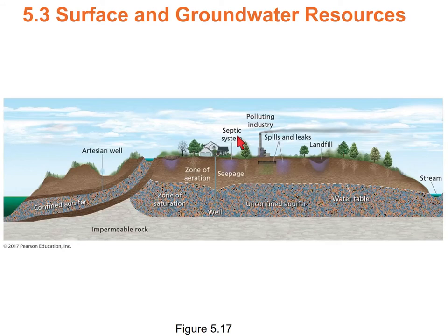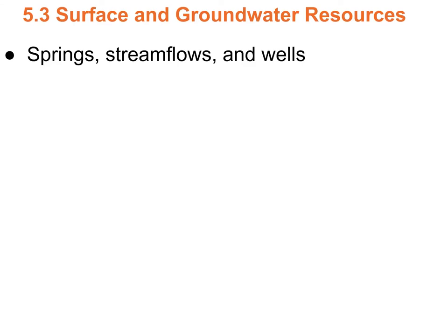Sources of groundwater pollution include septic systems, industrial pollution, feedlots, landfills, and gasoline tanks at gas stations. Once an aquifer is contaminated, that's pretty much it — you can't use that water for drinking anymore. It's just too hard to clean up.